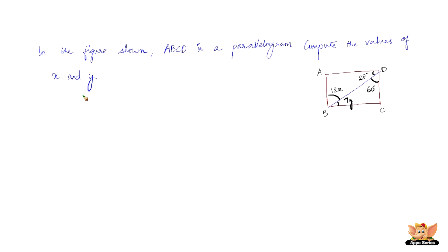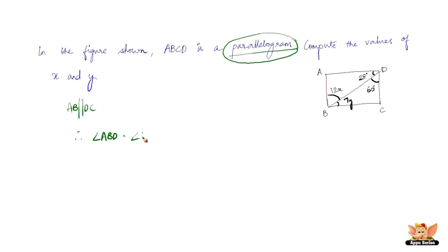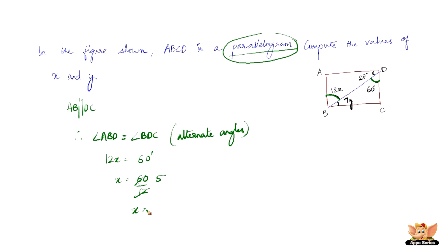Let us solve another problem based on parallelogram. In the figure shown, ABCD is a parallelogram. We need to compute the values of X and Y. We know that AB is parallel to DC, and the transversal BD intersects them at B and D. Therefore, angle ABD equals angle BDC, because they are alternate angles. Angle ABD equals 12X and angle BDC equals 60 degrees, so X equals 60 divided by 12, which is 5.